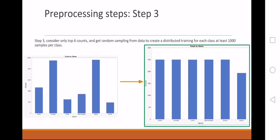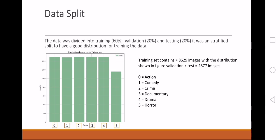What we did next is we stayed with the top six counts. We only left with action, comedy, crime, documentary, drama, and horror, and we used random sampling to make a more distributed data set. We used a 60-20-20 split for training, validation, and testing. We used an integer encoding.